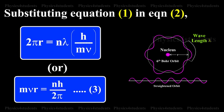Substituting equation 1 in equation 2, 2πr = n(h/mv), or mvr = nh/2π. This is equation 3.